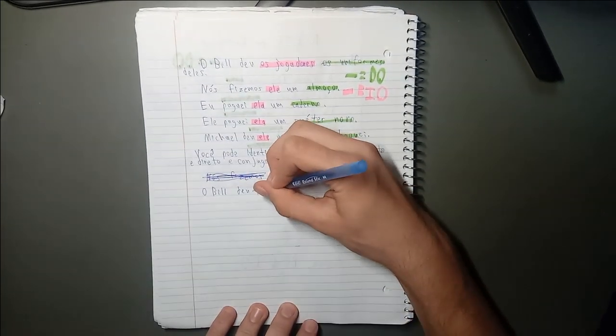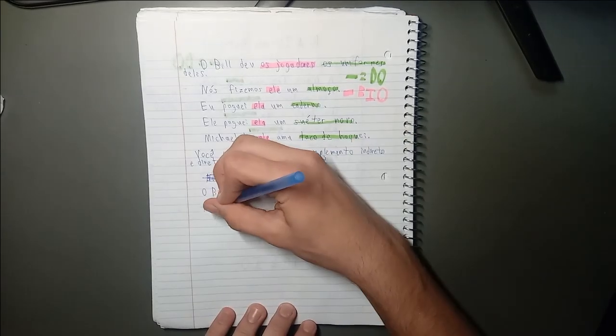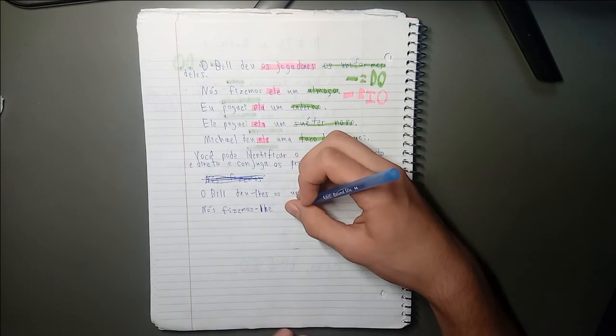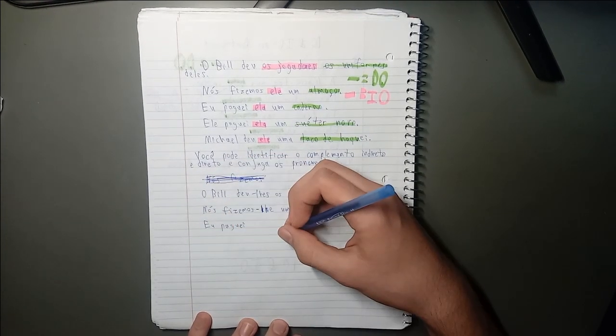Here are the answers to those. O Bill deu-lhes os uniformes deles. Nós fizemos-lhe um almoço. Eu paguei-lhe um caderno. Ele comprou-lhe um suéter novo. Michael deu-lhe um taco.